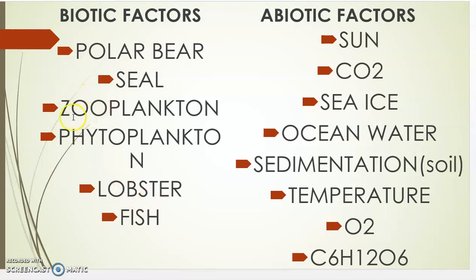Zooplankton — the prefix 'zoo' here means animal, so those are the tiny little animal species that you see in the water. Phytoplankton — the prefix 'phyto' here means plant, so those are the plant life species in the water.